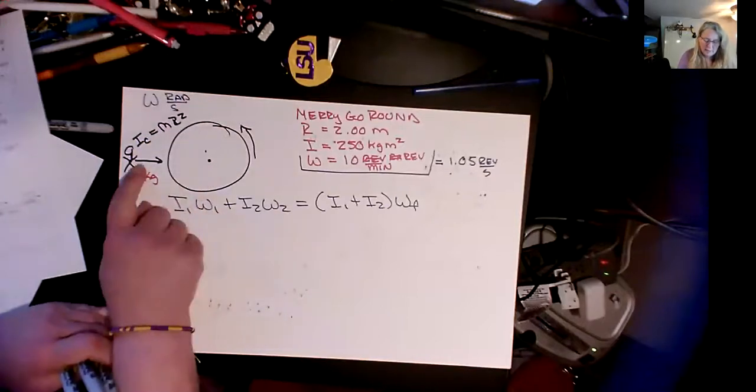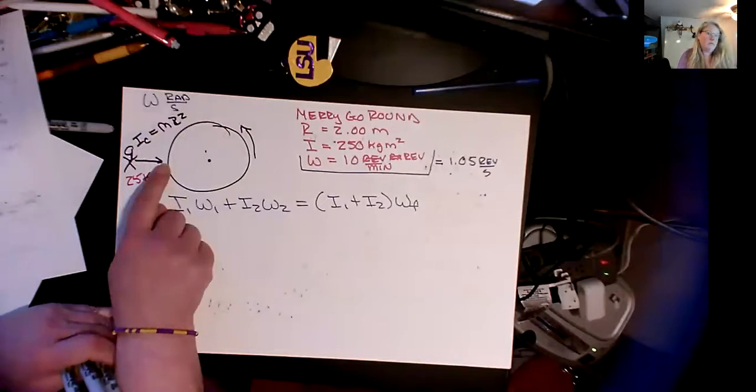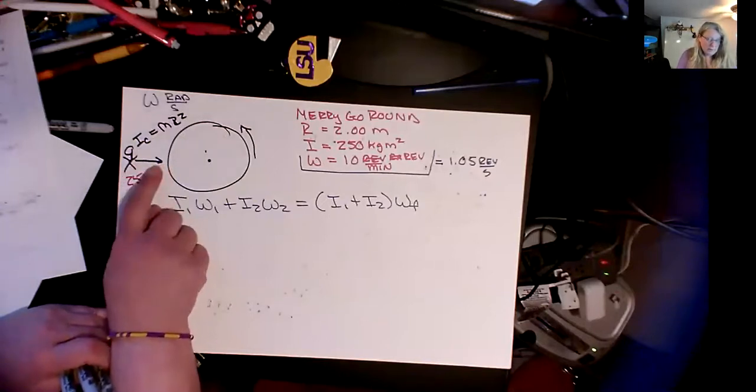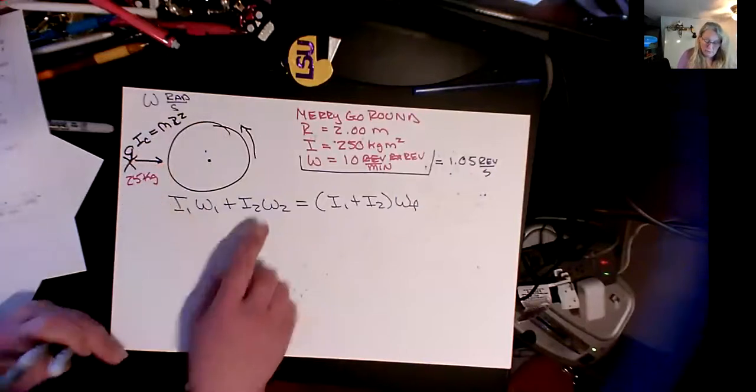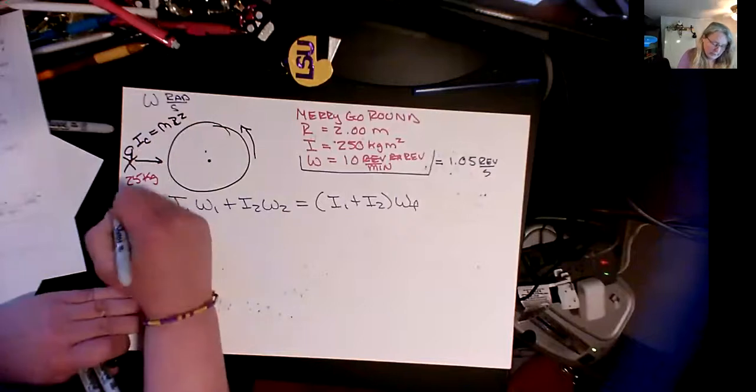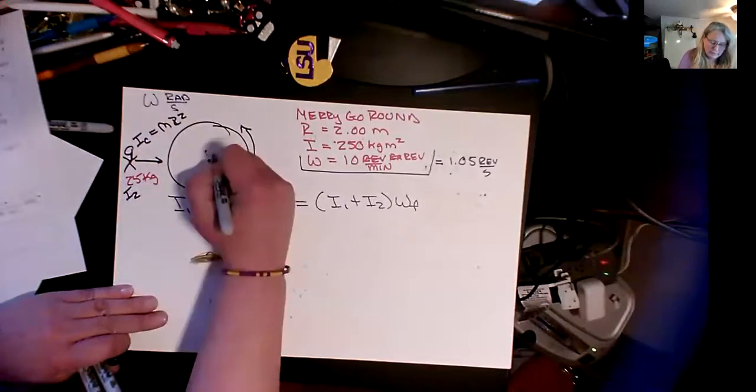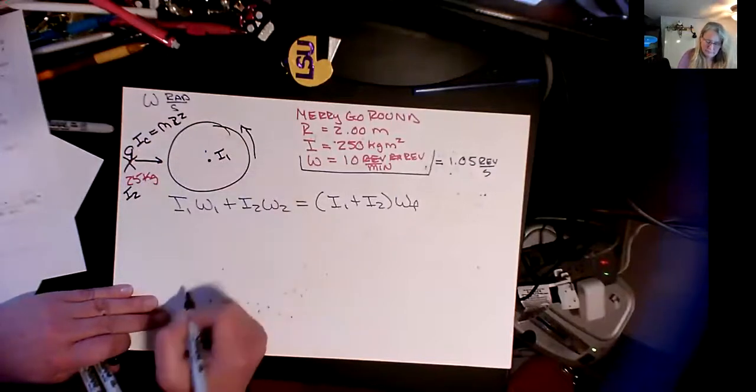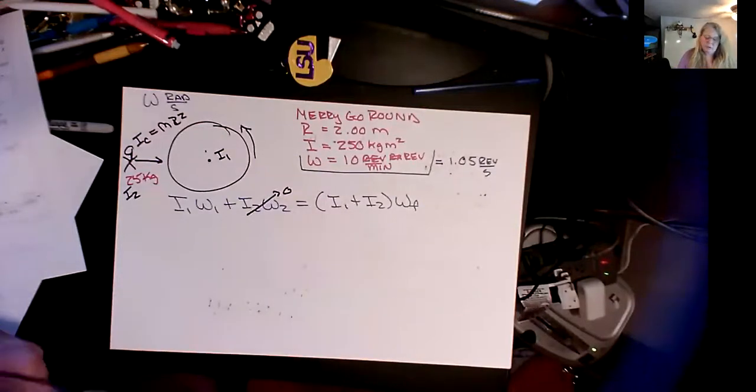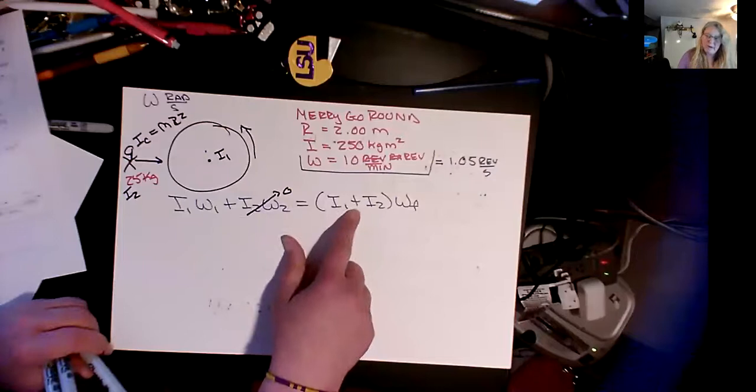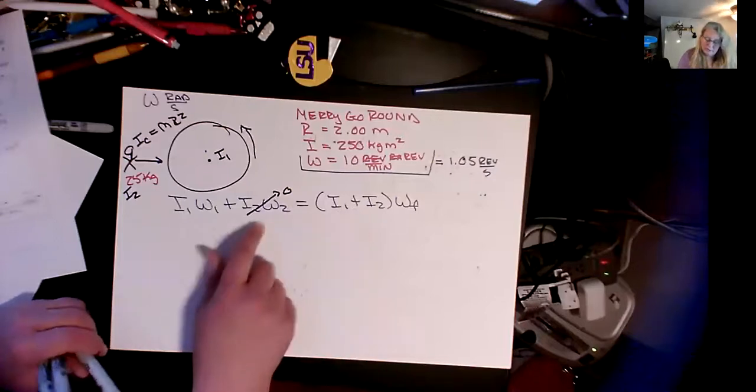Now, did they have any angular momentum before they hit? Hopefully you said no. They're heading straight on. They're not rotating. So the child, I'll call the child i₂ and this i₁, i₂ is at zero initially. As soon as they hit the stick, now they're going to have angular momentum, but they're at zero initially.